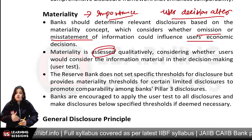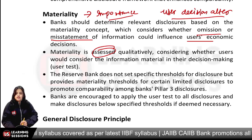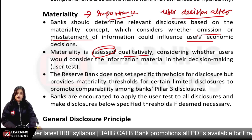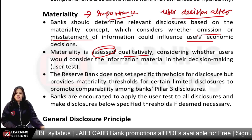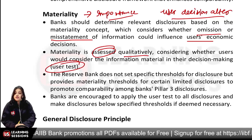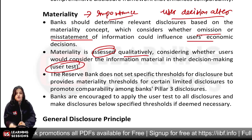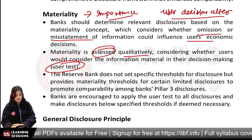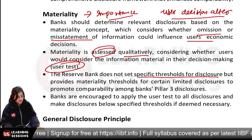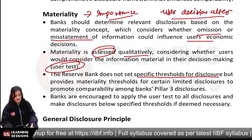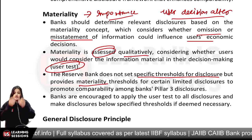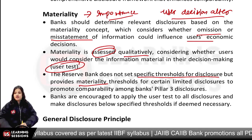Material information should not be omitted and should be correct. How do we know that this information can alter the user's decision? We qualitatively determine whether users would consider information material in their decision making — a user test of whether the information is useful or not.